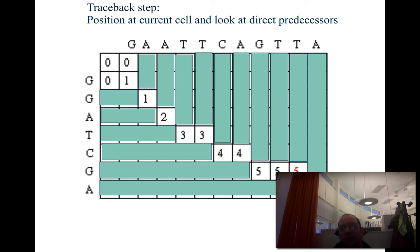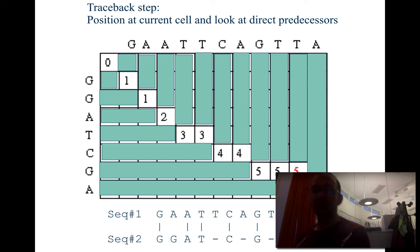Following this traceback gives us the alignment: G aligns to G, then A to A, then T to T, then you have a gap, then C to C, then a gap, then G to G, then two gaps, then A to A. This is the optimal alignment, or one of the optimal alignments, because you can have small variations with the same score. You have six positions that are identical.